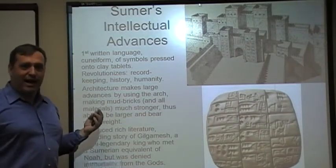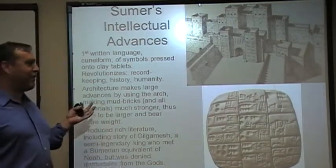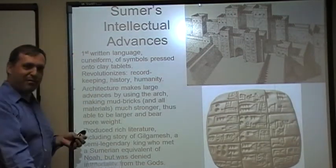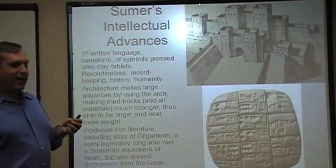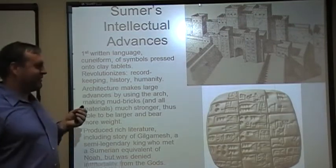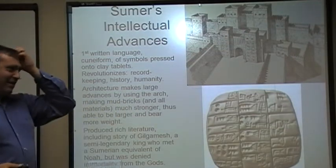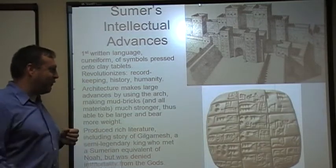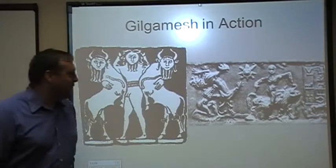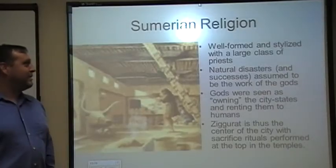As Gilgamesh ages, he realizes that even he will have to die, so he goes off and meets the Sumerian equivalent of Noah — a guy sitting by the river who apparently survived the Great Flood. He asks him the secret of immortality. The man says you've got to swim down to the bottom of the river and get the grass that grows there, and if you can get it, it'll grant immortality. Just as he swims down and is about to grasp it, a snake sent by the gods snatches it away from him. So Gilgamesh dies before he can attain immortality. Who knew you could get all that from stuff just pressed into clay tablets?